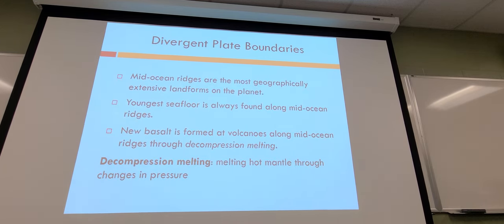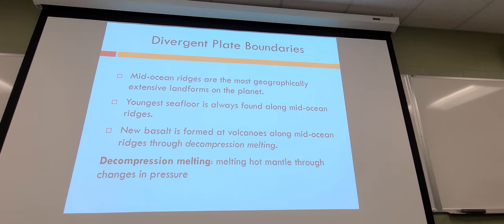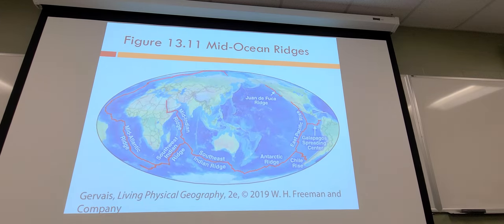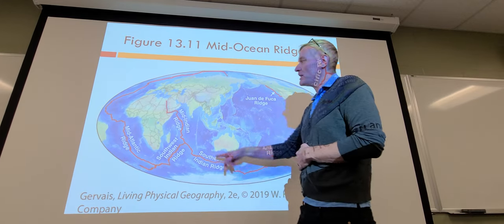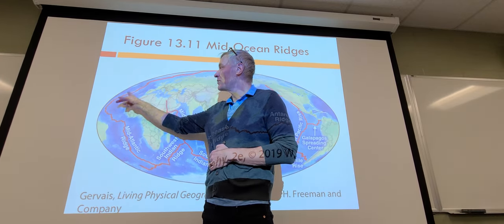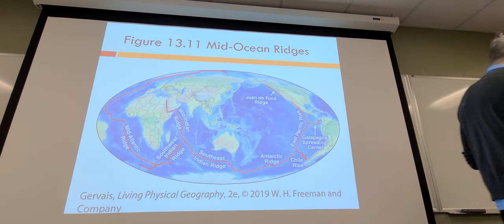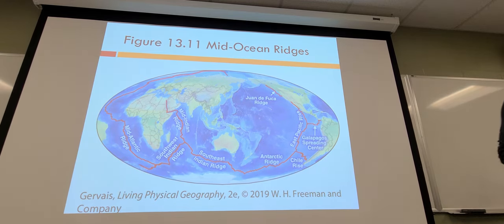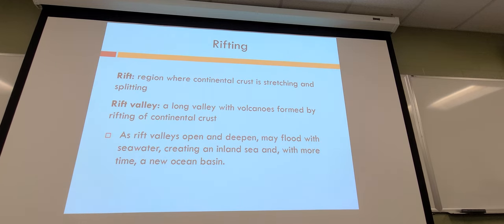Divergent plate boundaries are where the youngest rock is being born. The seafloor is spreading — this is the very youngest rock. Volcanoes churn out younger rock as well, but that tends to be a more explosive process. Seafloor spreading is more of a continuous, steady process of making new rock.